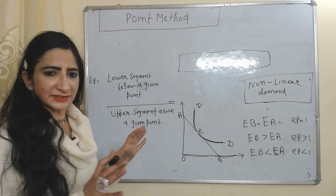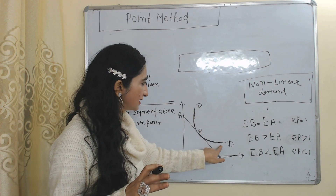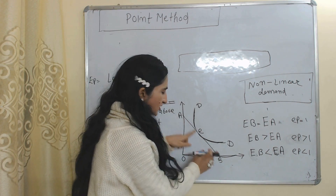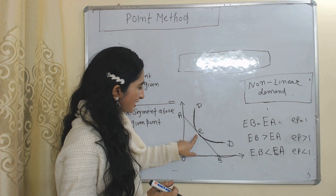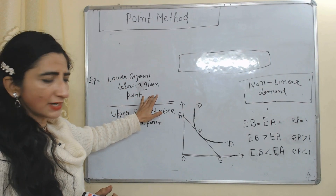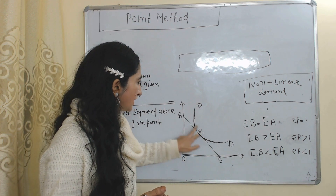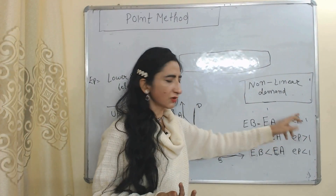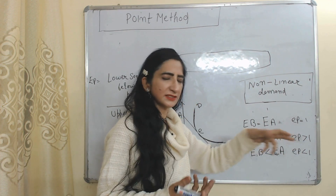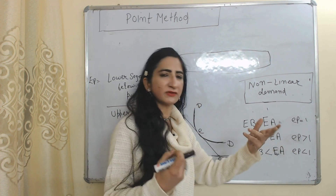Now we will see point elasticity of demand when the demand curve is non-linear. Here DD is a non-linear demand curve. When we have a non-linear demand curve, first of all we draw a tangent. Here we draw tangent AB and we calculate price elasticity of demand at point E. The formula is the same: lower segment below the given point divided by upper segment above the given point. If EB equals EA, price elasticity equals 1. If EB is greater than EA, price elasticity is greater than 1. If EB is less than EA, price elasticity is less than 1.